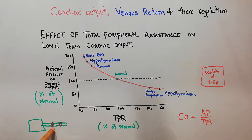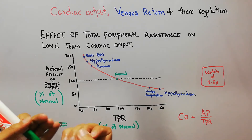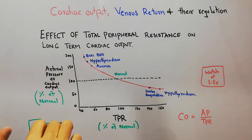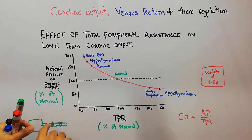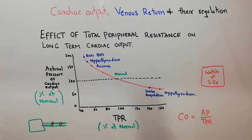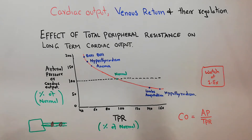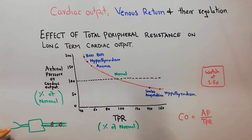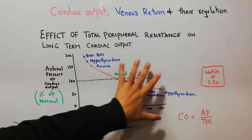If this resistance increases — if the blood vessels get constricted or tightened, or due to any blockage this peripheral resistance increases — or if due to any reason this resistance decreases and the blood vessels dilate, there will be some effect on the cardiac output, and we are going to explain that effect with the help of this graph.